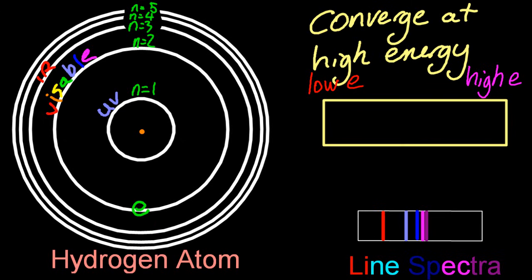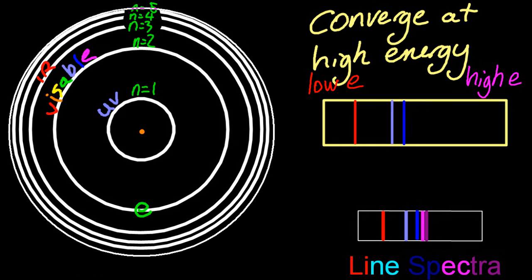If the electron moves from n equals three to n equals two, it's going to release red light. If it moves from n equals four to n equals two, that's a bigger jump, and so it's going to release higher energy visible light. And in fact, that accounts for that light blue line. And when it jumps from n equals five down to n equals two, that's a bigger jump, so it's going to be a bigger energy photon, in this case, dark blue, I suppose.